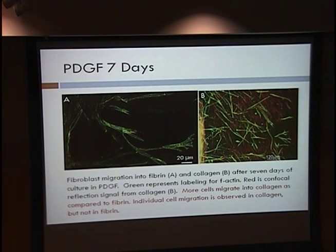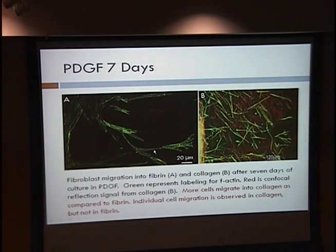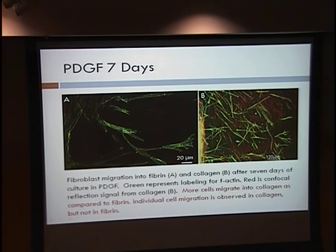Here are pictures from seven days. On the left, cells are migrating out into the fibrin and again forming these interconnected bridges, working together. On the right, here's the button, and cells are migrating out into the collagen — more cells have migrated out, and they're working individually.